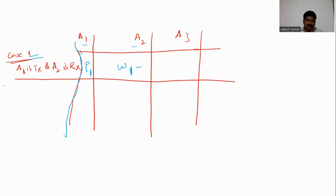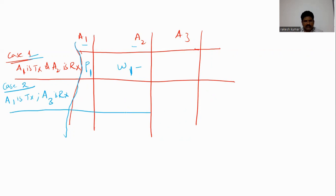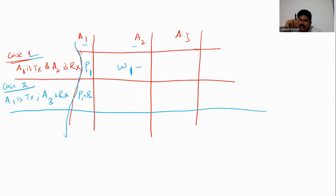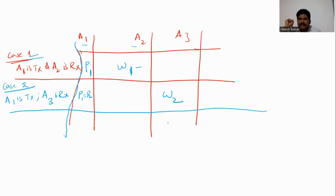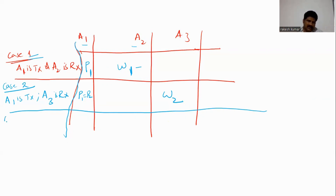In Case 2, A1 is again the transmitting antenna and A3 is the receiving antenna. The transmitted power P2 equals P1, since A1 is the transmitting antenna in both cases. W2 is the amount of power received by receiving antenna A3.